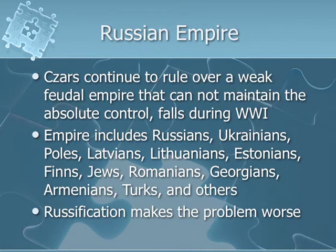The Tsars continued to rule over a weak feudal Russian Empire that could not maintain absolute control, and it fell apart during World War I. The Russian Empire included Russians, Ukrainians, Poles, Latvians, Lithuanians, Estonians, Finns, Jews, Romanians, Georgians, Armenians, Turks, and many other groups. The Russification enforced by Alexander III made the problem worse — by forcing people to give up their own ethnicity and national culture, it actually reinforced the idea of nationalism.